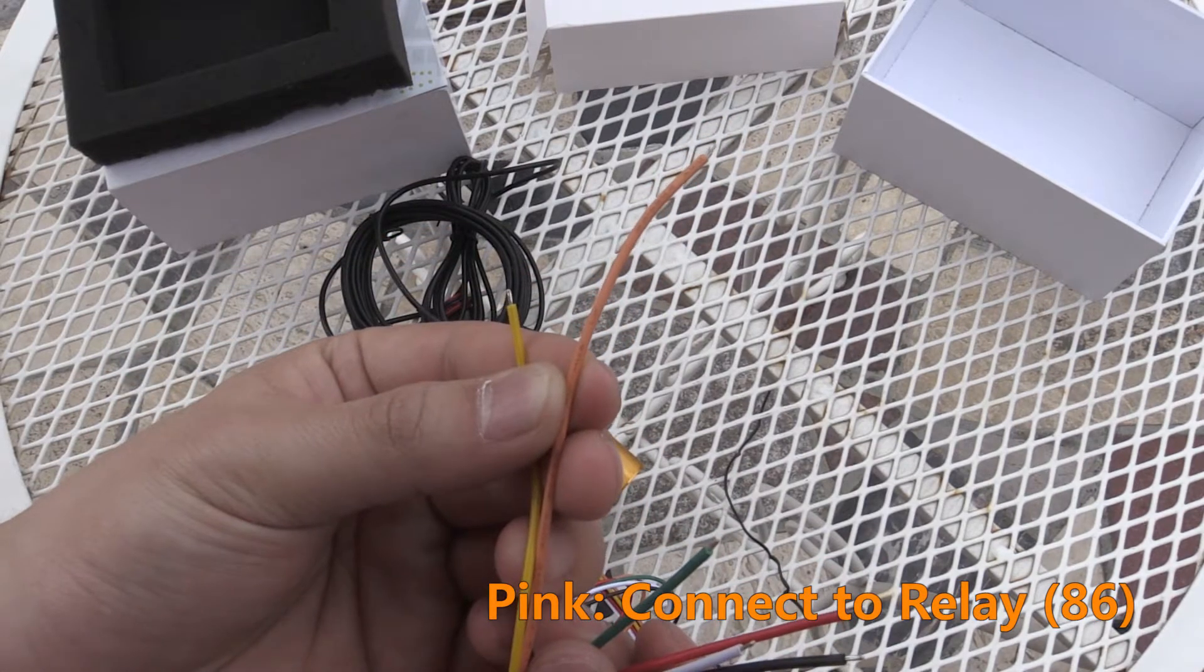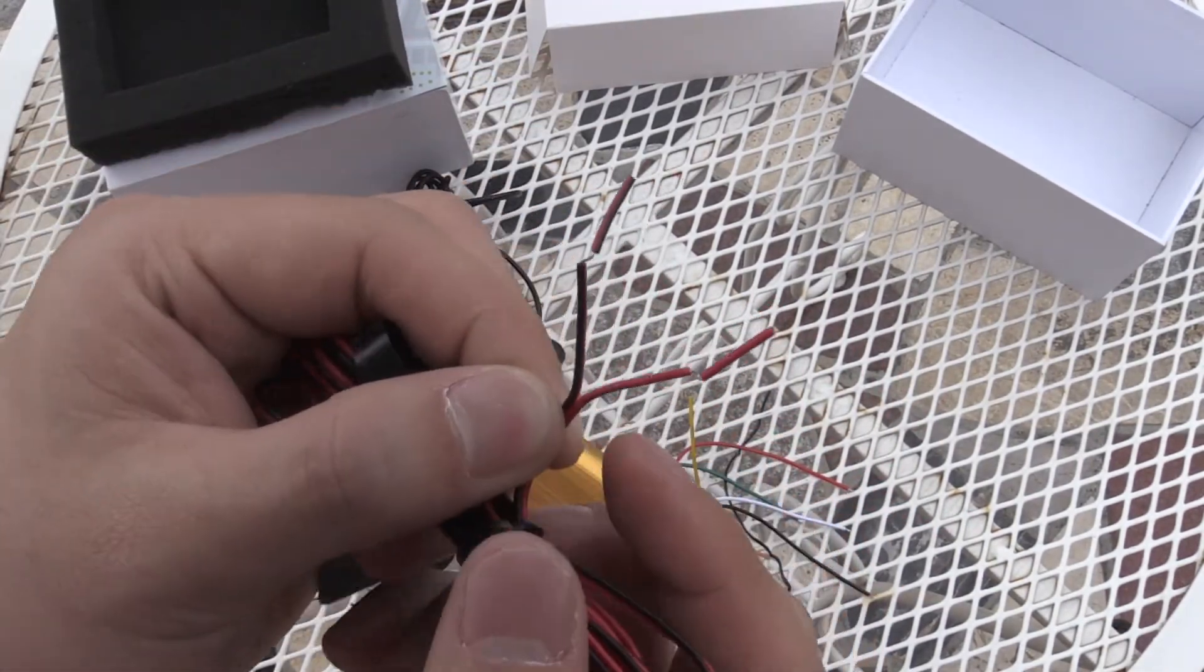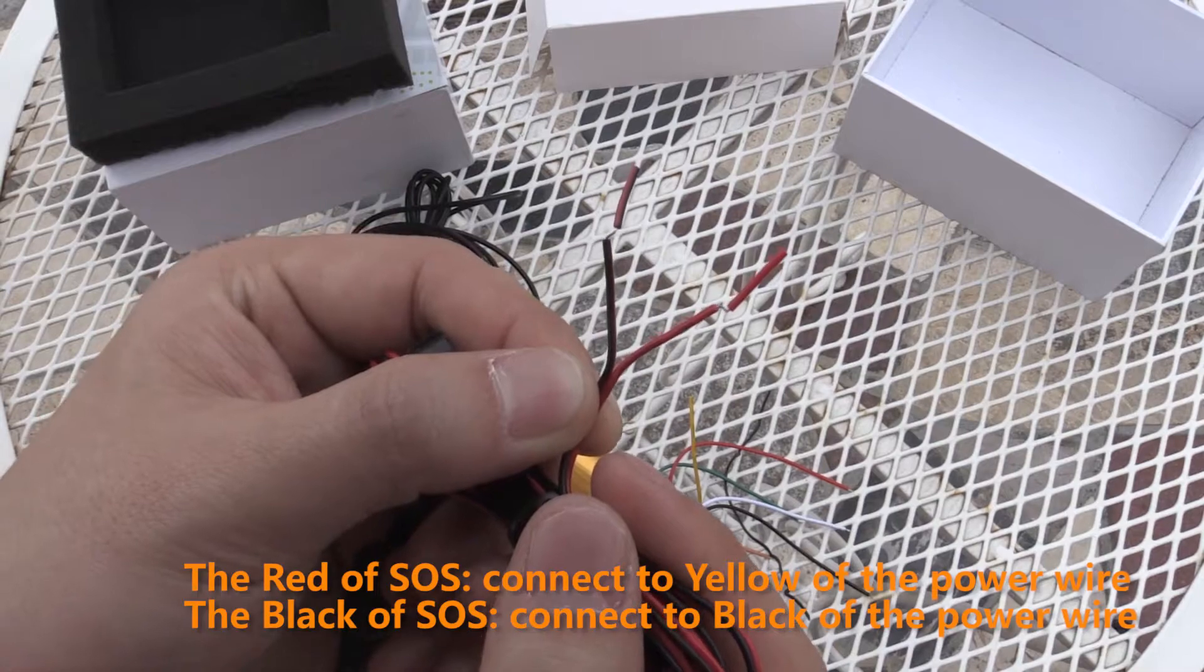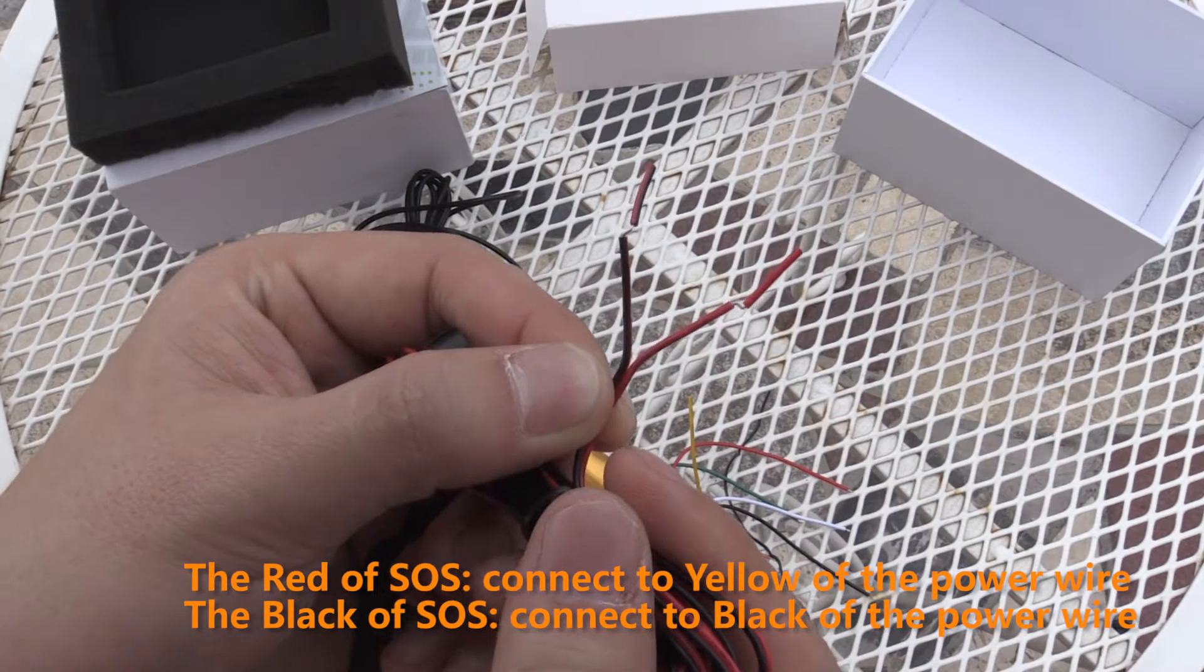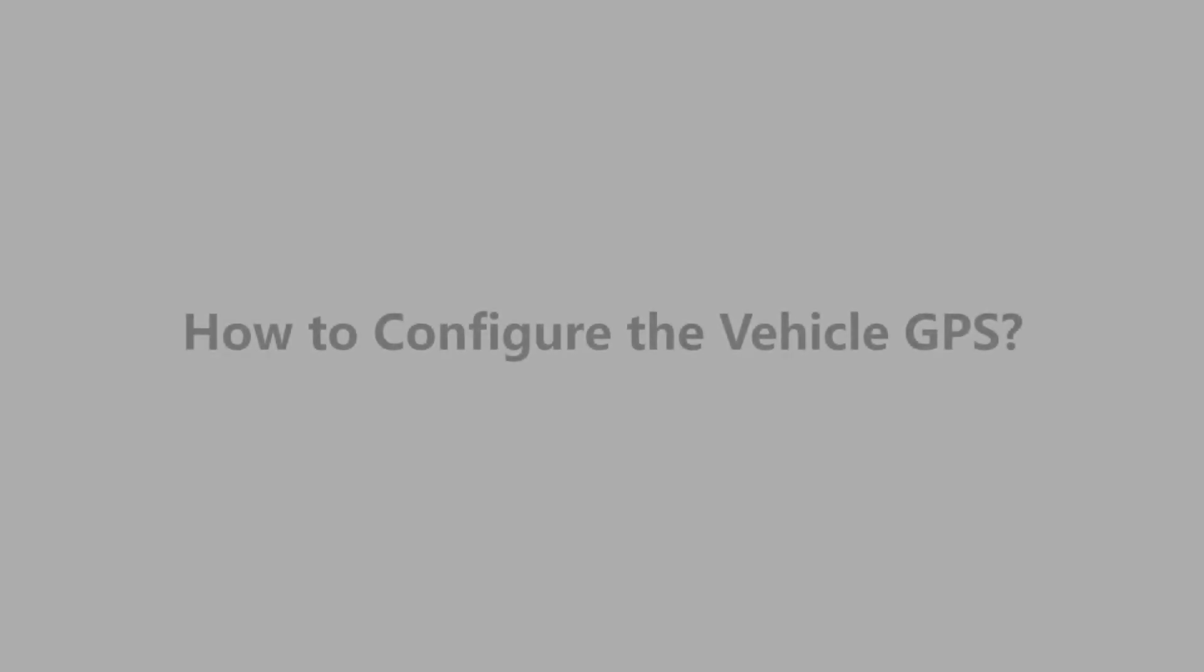Four, install the SOS. The red of SOS connect to yellow of the power wire. The black of SOS connect to black of the power wire. How to configure the vehicle GPS when connecting to the server for the first time.